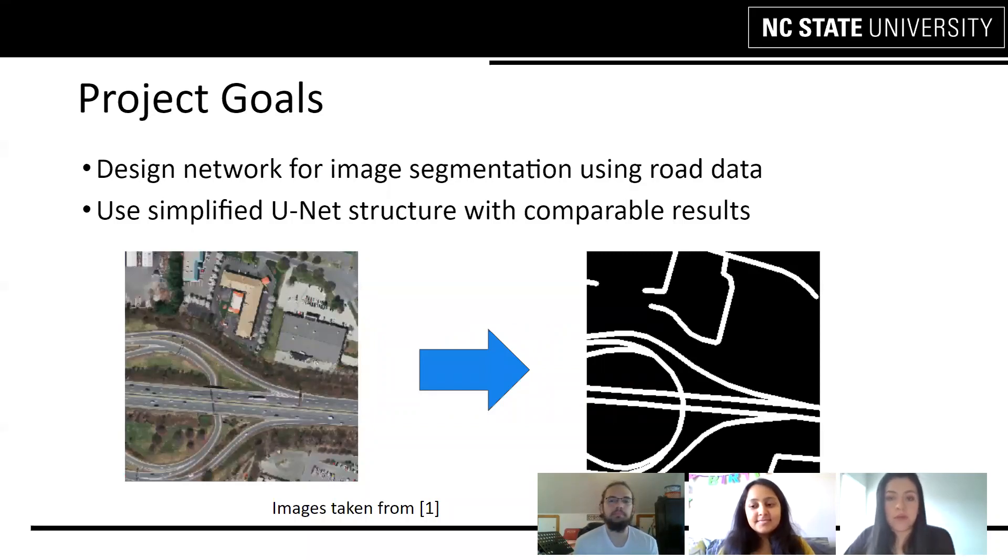The goal of our project is to design a network for image segmentation using road data. The use of image segmentation allows for an image to be broken up into its mere recognizable regions of interest. This can be further applied to tasks such as making maps, object detection, and geographical monitoring.